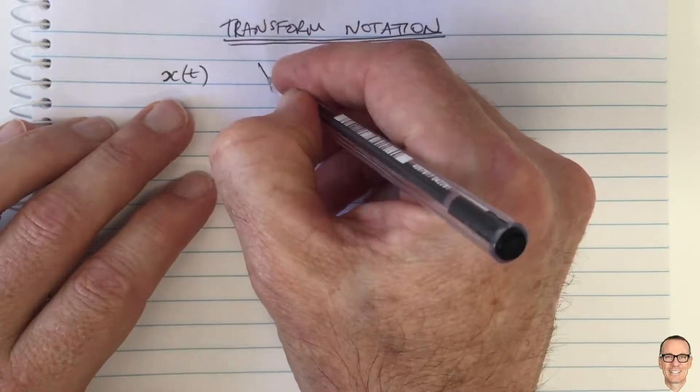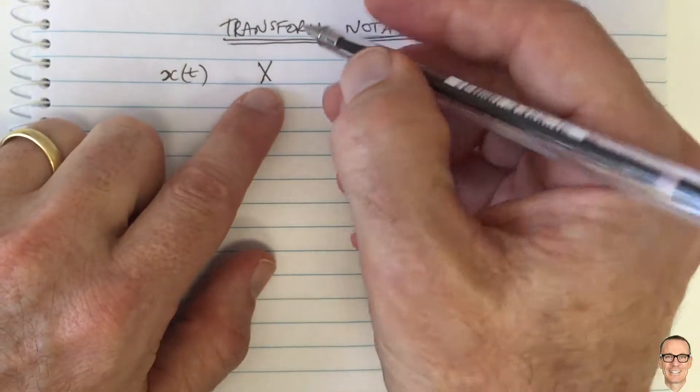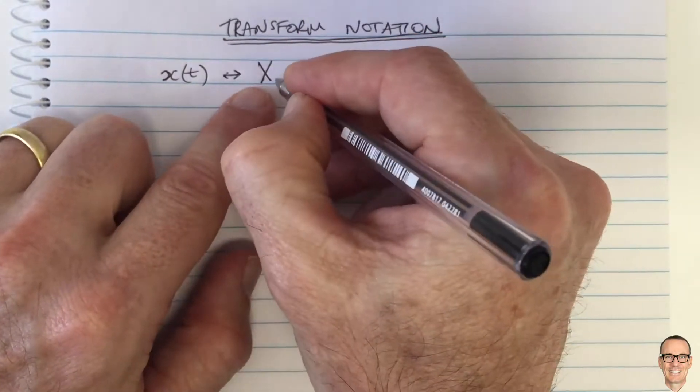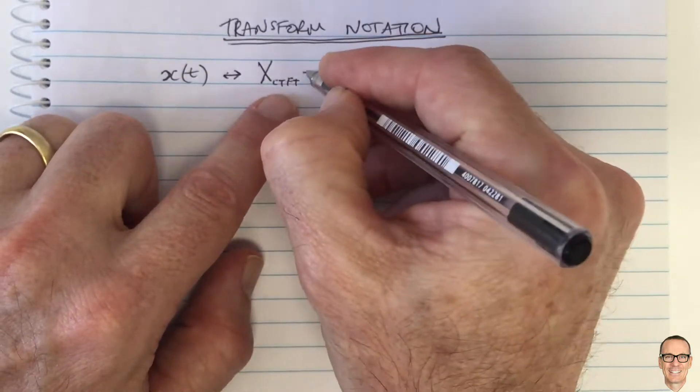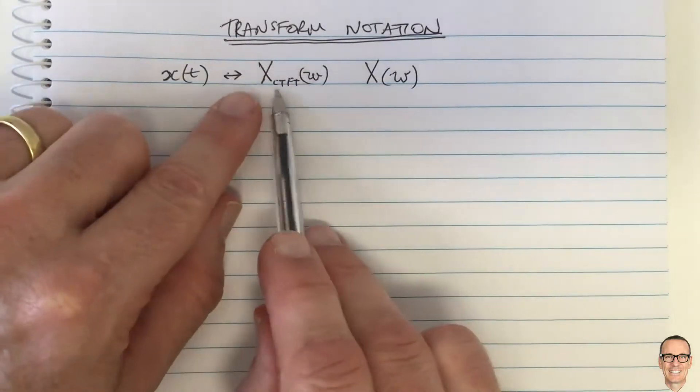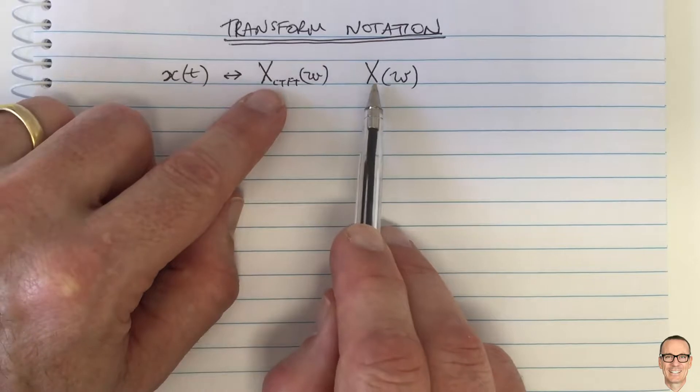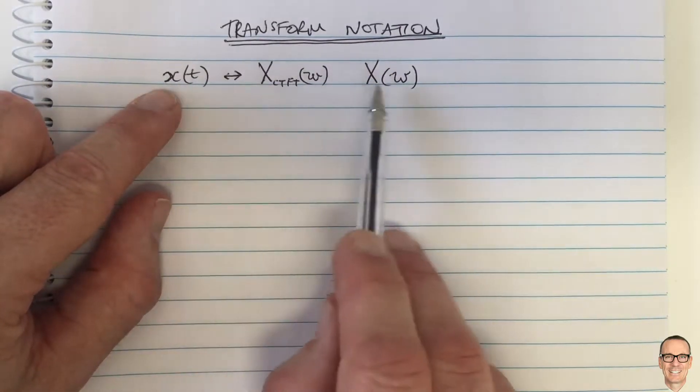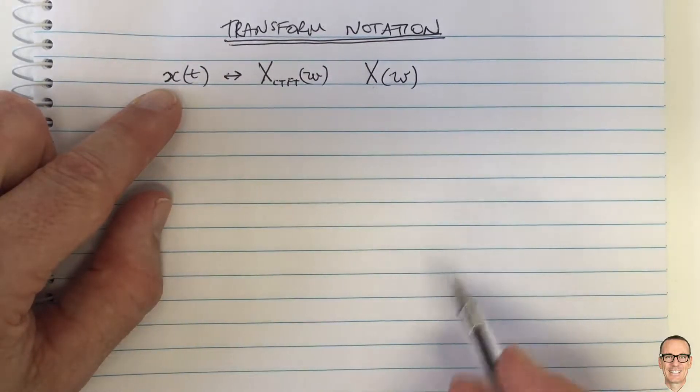Really, we should probably call this a capital for the transform, but we should give it the subscript continuous time Fourier transform. And yes, it's a function of omega. But we tend to just leave off the continuous time Fourier transform subscript on the capital, and we just assume that if you see a capital X, you know it's a transform of x. And when there's only omega, it implies that it's the Fourier transform.